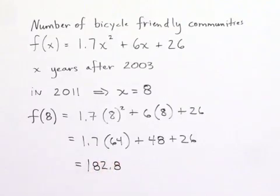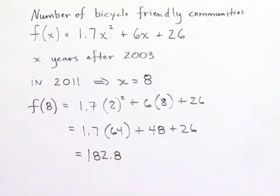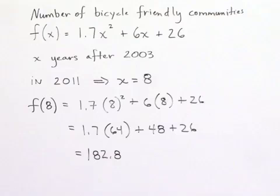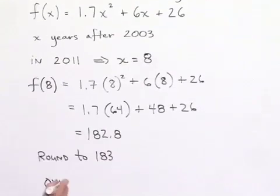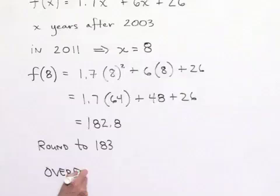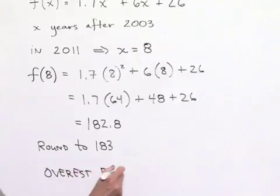Looking at the chart, we notice that in 2011 the value is 180. If we take our result and round it, we're going to round to the value of 183. So we can see that this compared to 180 is going to end up being an overestimate by 3 communities.